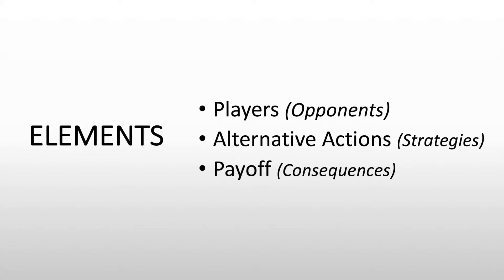There are three elements of Game Theory in order for us to analyze a competitive situation. First, we have to have our players or our opponents. Then we need to have our alternative actions or the strategies for each of these players, and the payoff or the consequences if a player would choose a particular alternative action or a particular strategy. We will go through each one of them as we see one example later.